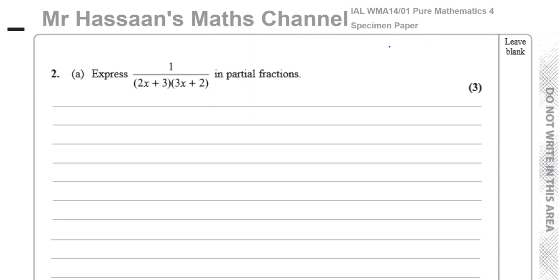When you have to express a fraction in partial fractions, what it means is they want you to split it up into separate fractions — take this one fraction and split it up into different parts. The first thing you must do is check whether it's a proper fraction or an improper fraction.